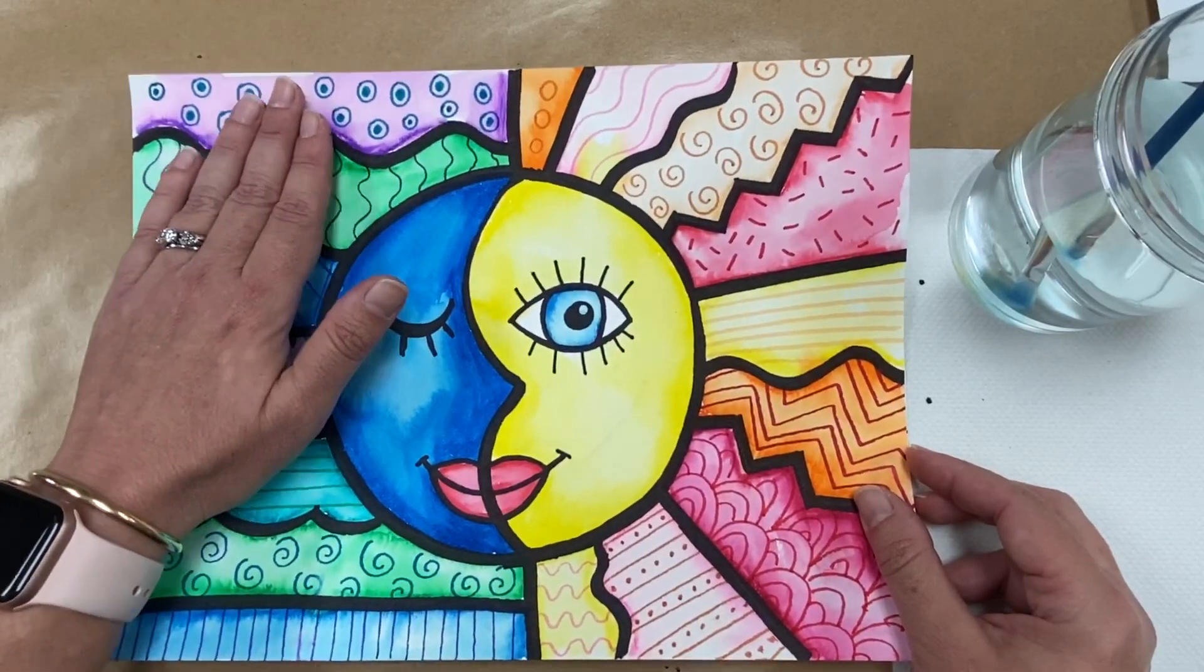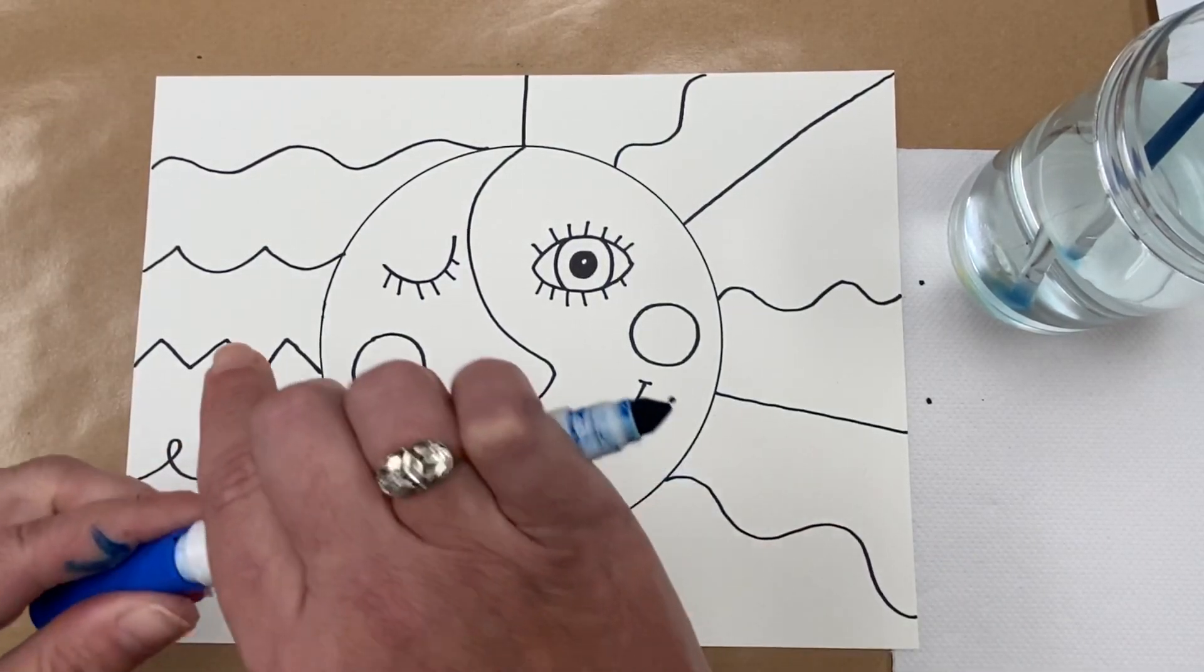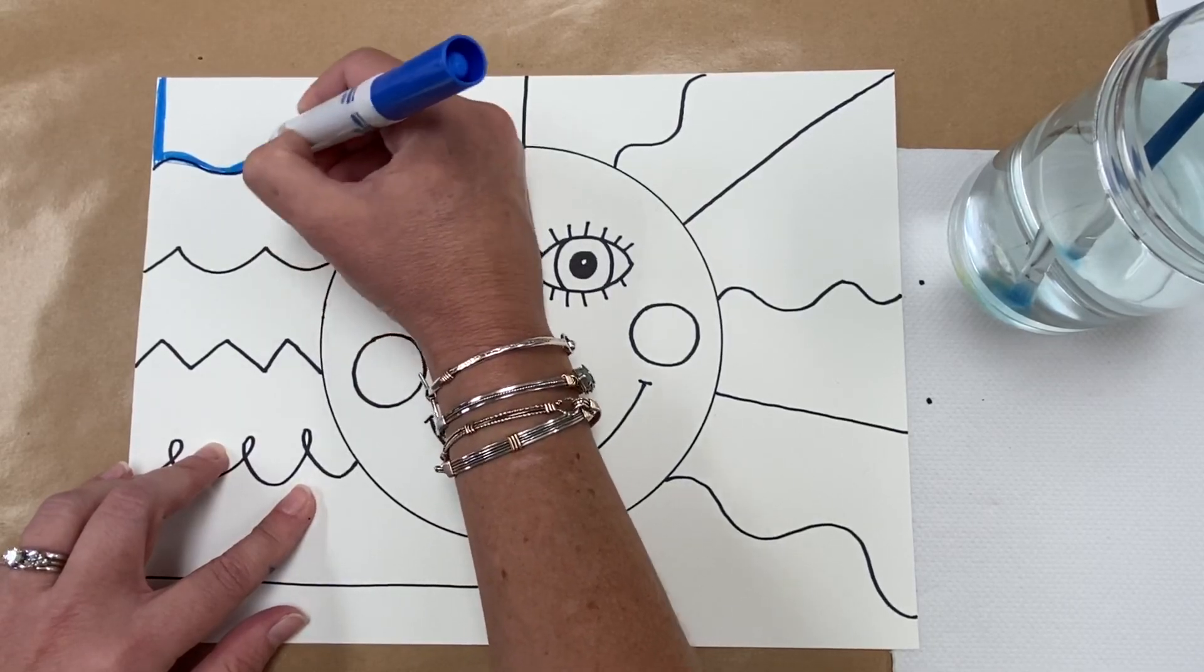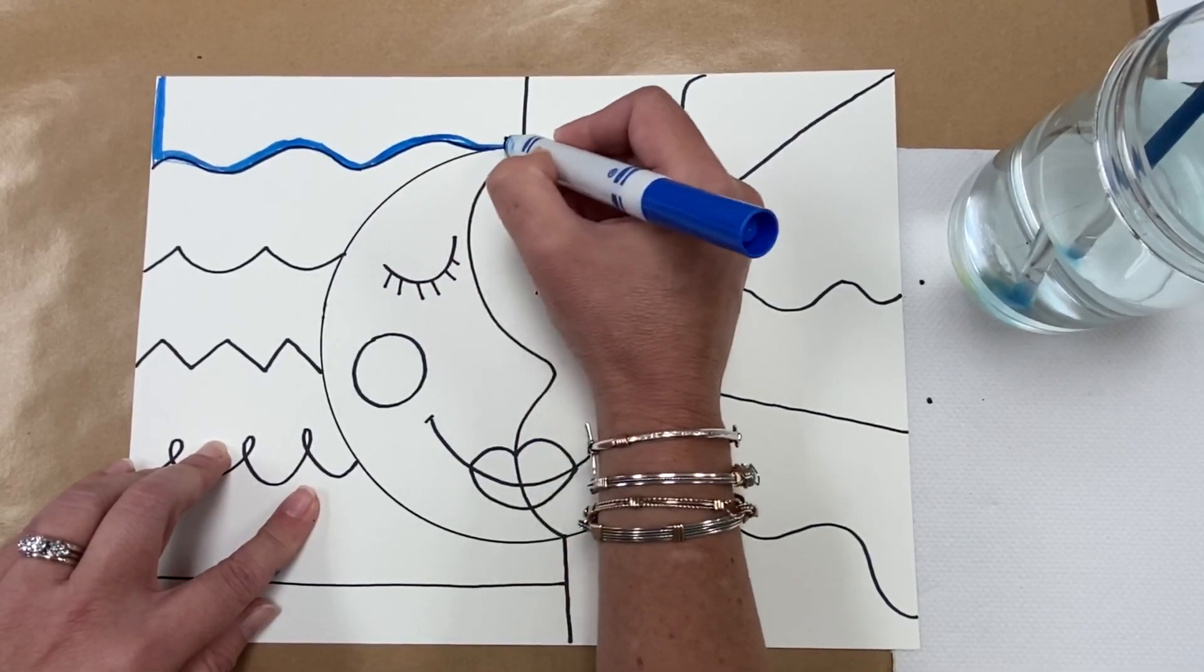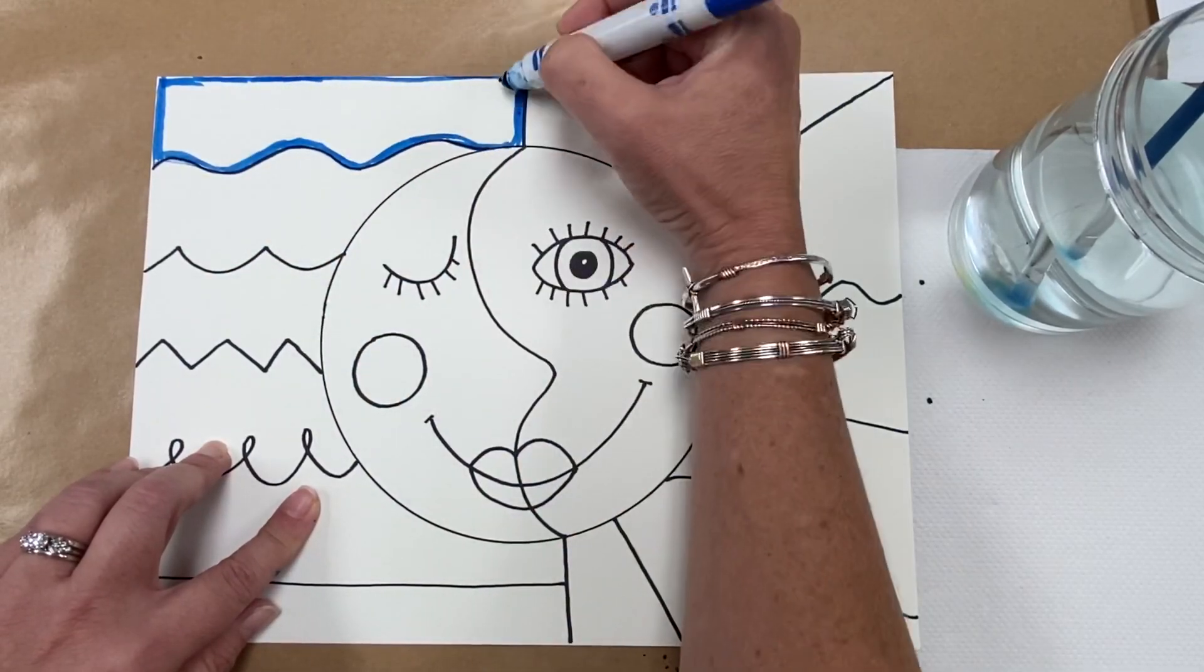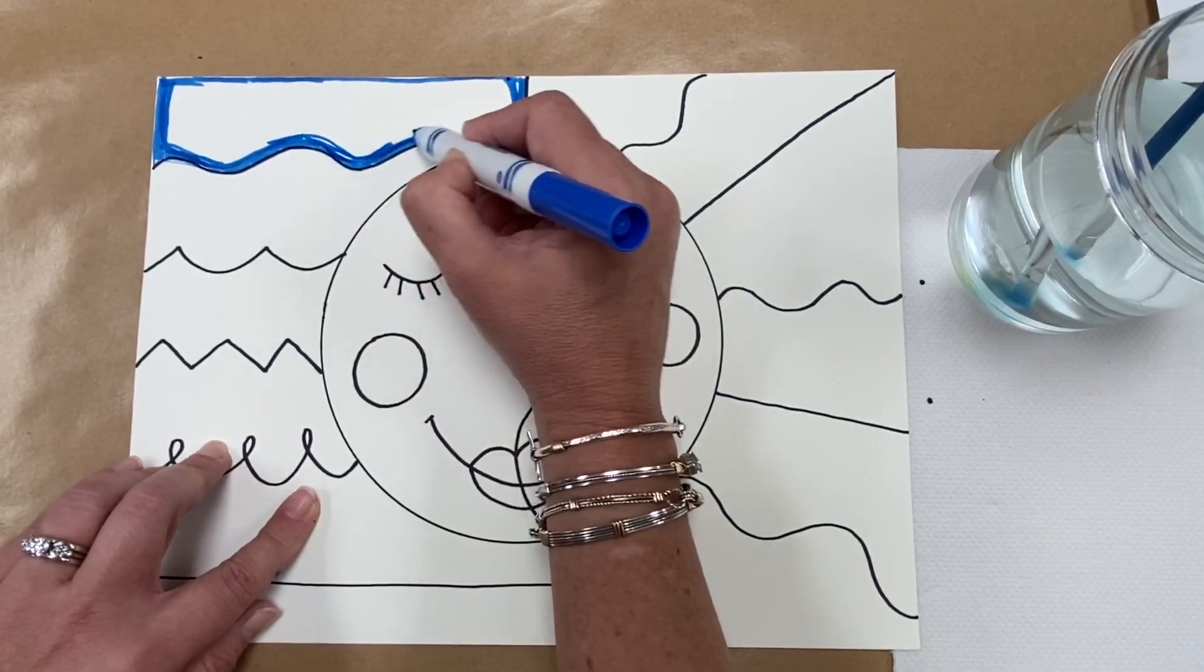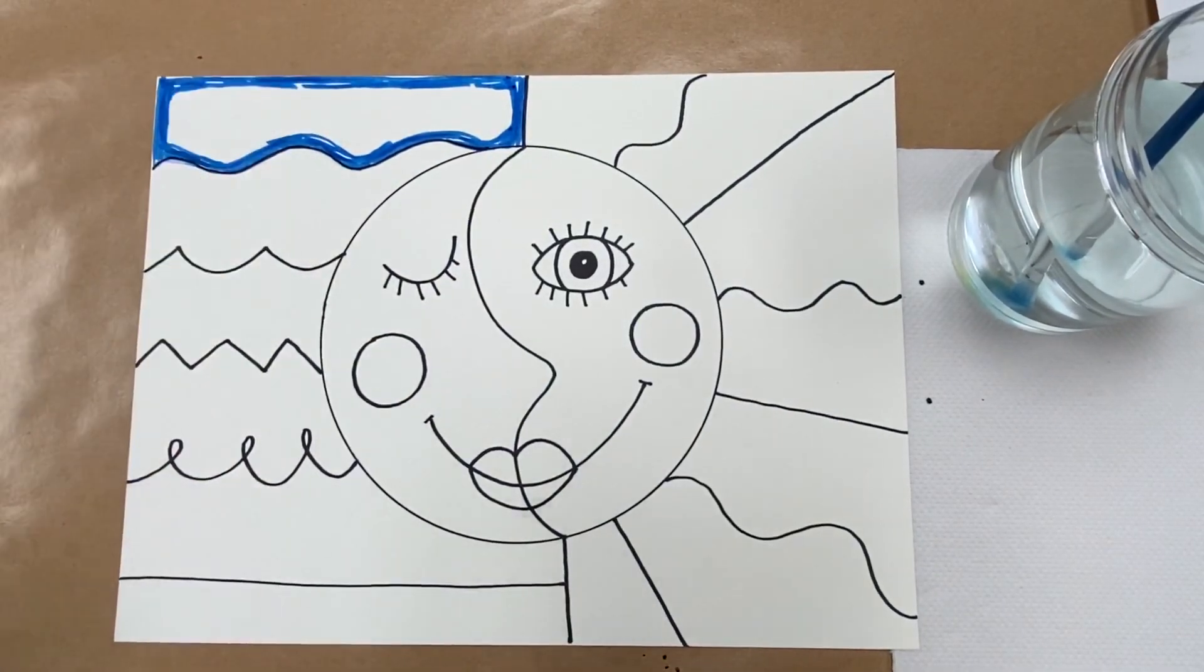So we're only going to choose our cool colors, our purples, our greens, and our blues for this side. So I'm going to go back and I'm going to get my blue marker and I'm just going to kind of outline with a thick outline around my edges. It doesn't have to be really perfectly perfect. Just do the best you can going around. I think I'll make it a little thicker because I want a little more blue.